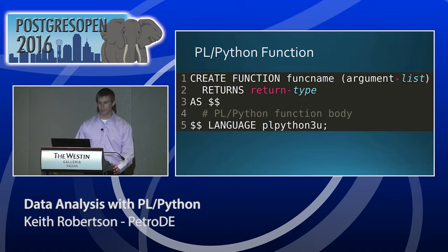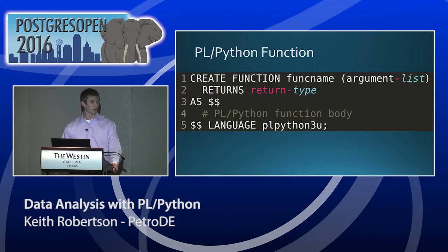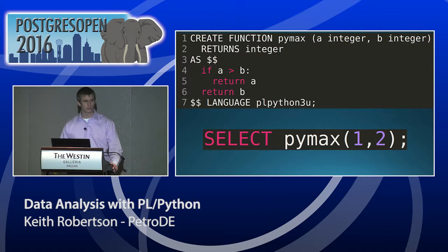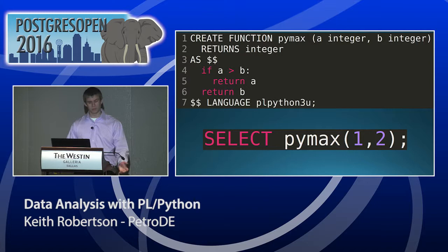The basic syntax of a PLPython function looks very familiar to anyone who has created a function in Postgres. You create a function, give it a name, a typed argument list, and a return type. In the function body, you're just writing straight Python. As an example, here's a function PyMax that takes two integers and returns the larger of the two. If A is greater than B, return A, otherwise return B, then specify the language. So `SELECT pymax(1, 2)` returns 2.